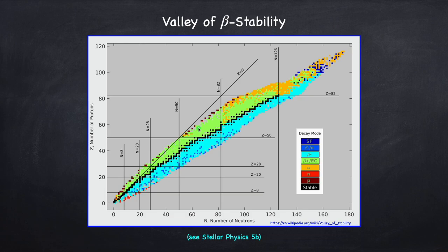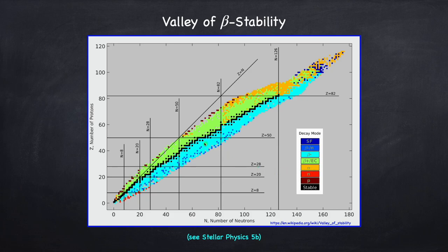The heavier the nucleus gets, the harder it is to capture a proton — that's one barrier for the RP process. There's also another problem: once you start getting to these orange dots along the proton drip line, these are unstable to alpha decay. So you're going to capture a proton, but then immediately pop off an alpha particle — a helium nucleus, two protons and two neutrons. In general, even if you have sufficiently high temperatures, it's very difficult to move past this area using the RP process, preventing you from making extremely heavy nuclei.